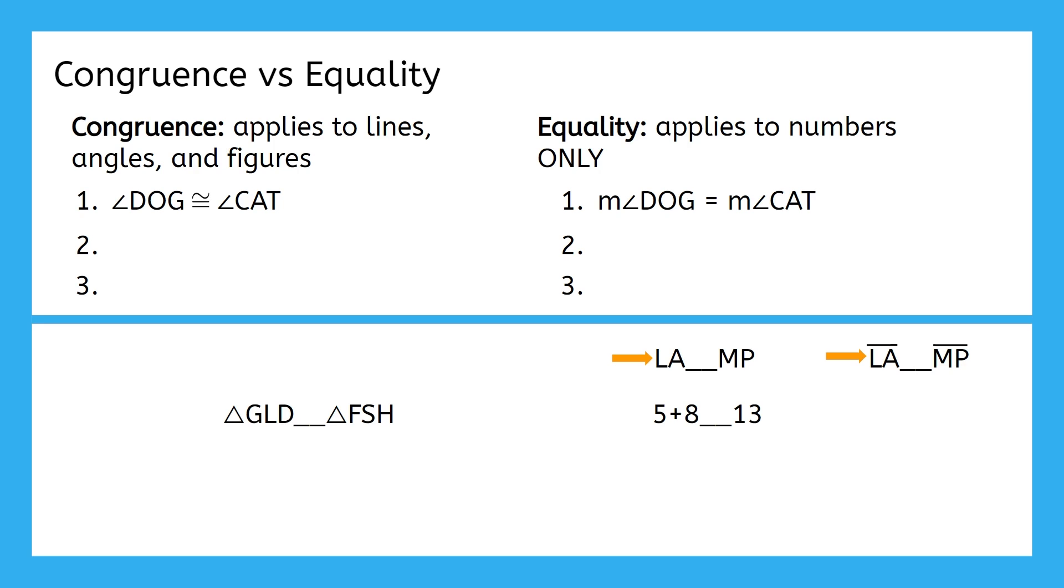When we use the segment notation, we are referring to the segments themselves. When there's no segment notation, we're referring to the length of the segment. Knowing that, how would you categorize each of these?